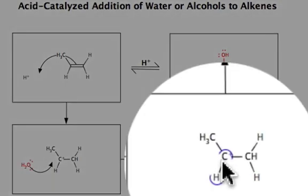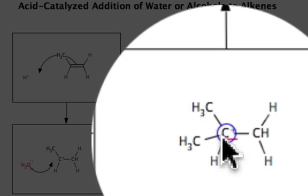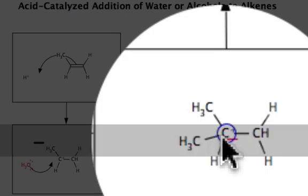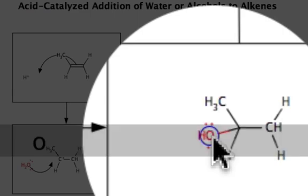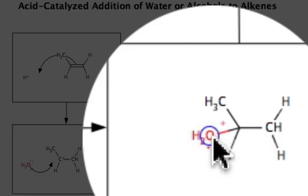And then by using my bonding tool and the hotkeys for charge, I could take away my positive charge and change this atom to my water group, being sure to include the positive charge to show that overall charge is conserved.